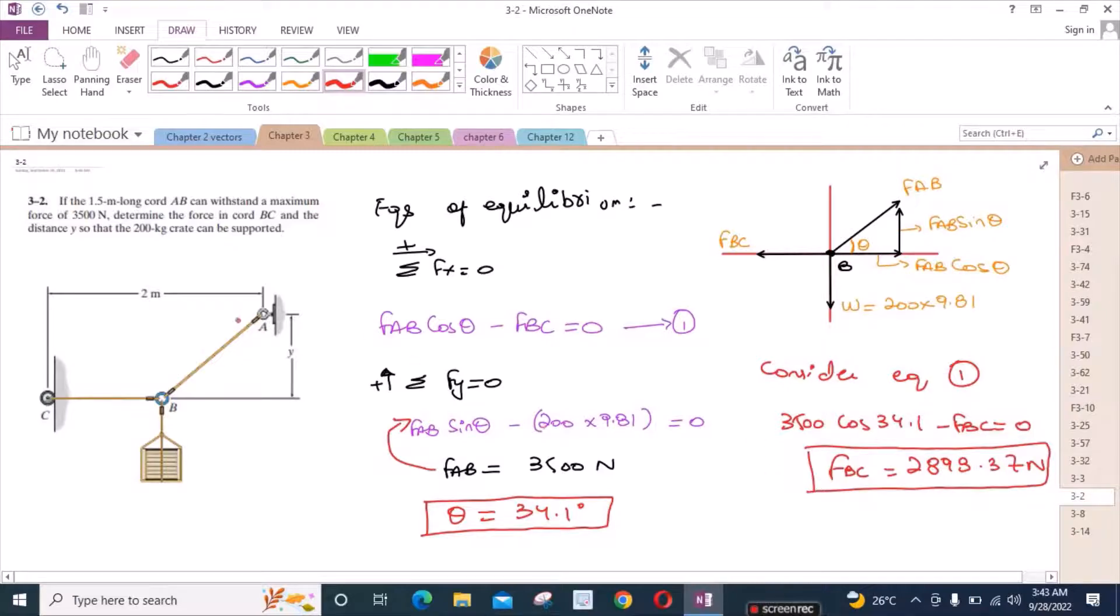Now we have to find the second part of this problem which is we have to find this distance Y. This distance basically. So what we have to do? We can consider a triangle. If I draw a line here, a perpendicular line, then we have a right angle triangle. Let's call this point C.